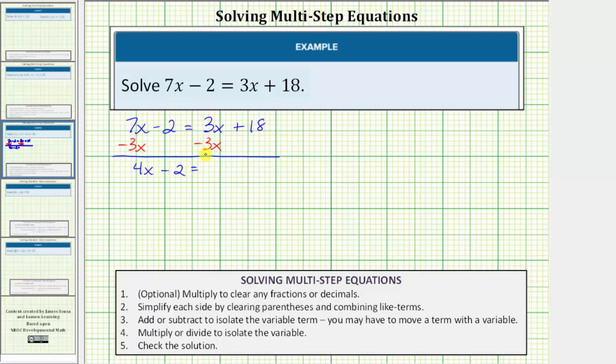So we have 4x minus 2 equals, on the right side, 3x minus 3x is zero. That's why we subtracted 3x on both sides. The right side simplifies to just 18. We're still not done with step three though. We have not isolated the variable term 4x.